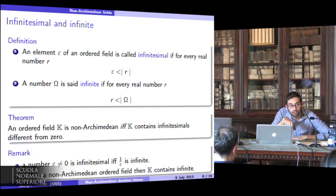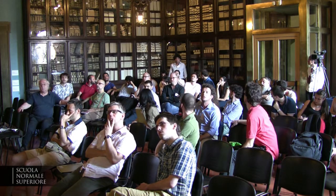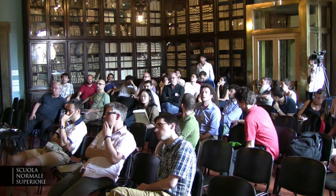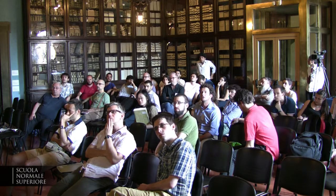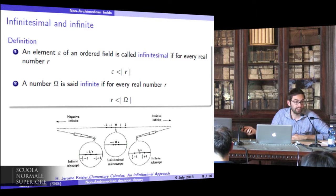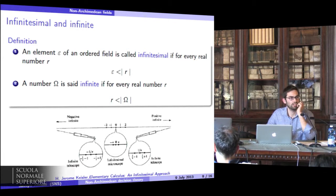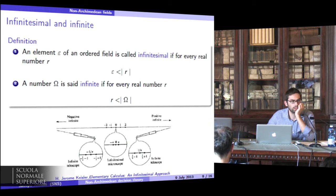So what's a real number in a general non-Archimedean field? You say that for every real, what's a real in a general non-Archimedean field? This is the real line. So every point is a real number. This portion is the infinitesimal numbers. But in a general non-Archimedean field, how can I tell whether a number of that field is real or not?